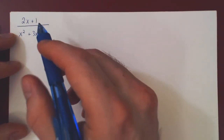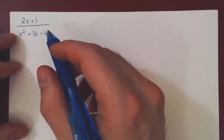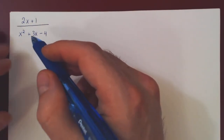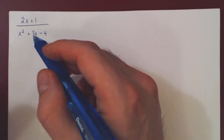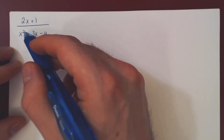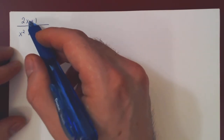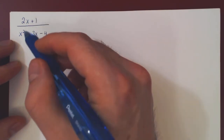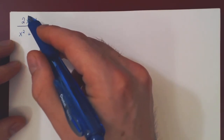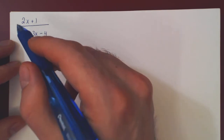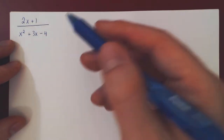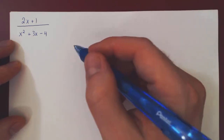In this video, we will carry out the partial fraction decomposition of this given rational function. The first step is always to look at the degrees of the numerator and denominator. The degree of our numerator is 1, and it is 2 for our denominator. As 1 is strictly less than 2, we can decompose this rational function into a sum of partial fractions.